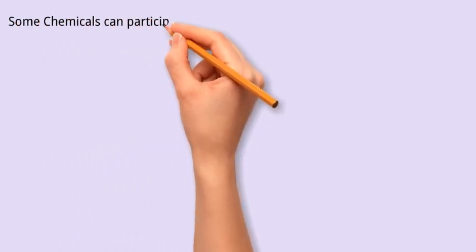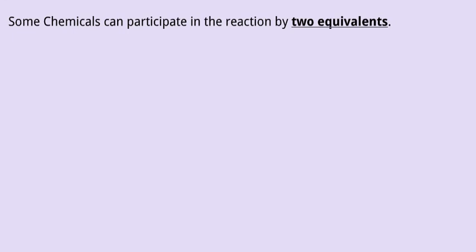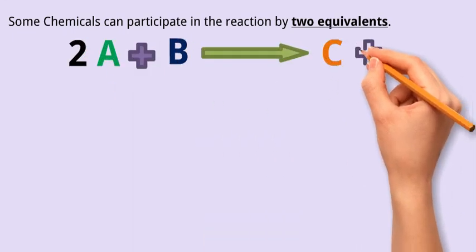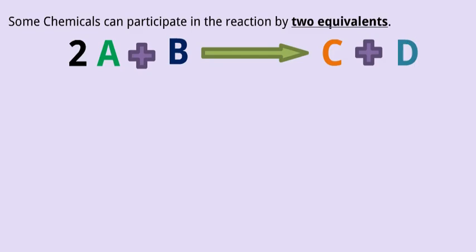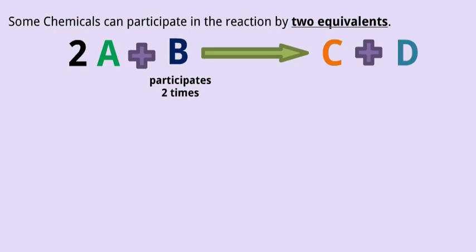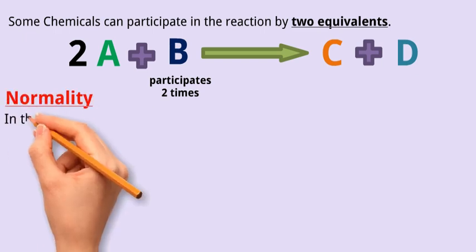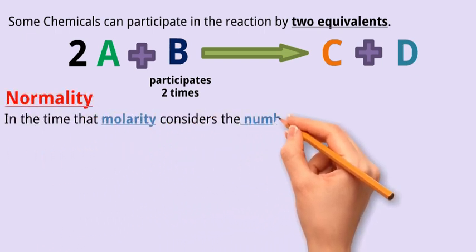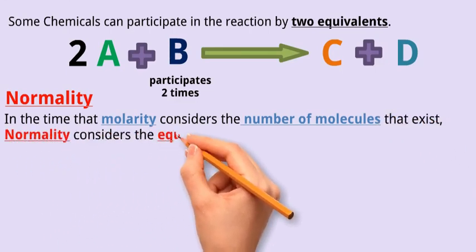Another issue that you may face is that some chemicals can participate in the reaction by two equivalents. In this case, two molecules of A interact with a molecule of B to generate C and D products. You can notice that B molecule participates two times in the reaction. So using molarity will not be helpful to prepare the reactants A and B for this chemical reaction. To handle this, another concentration unit comes into the context, which is normality. In the time that molarity considers the number of molecules that exist, normality considers the equivalent number.